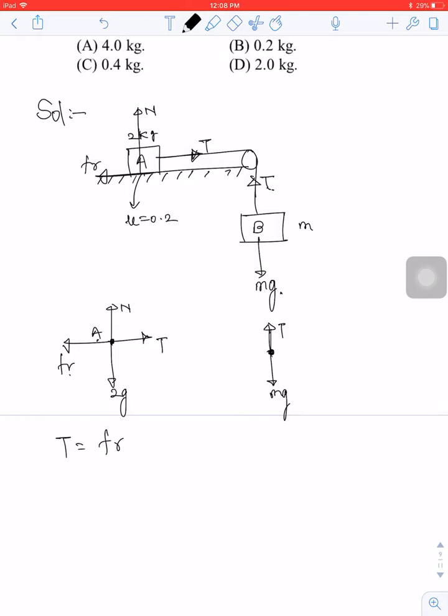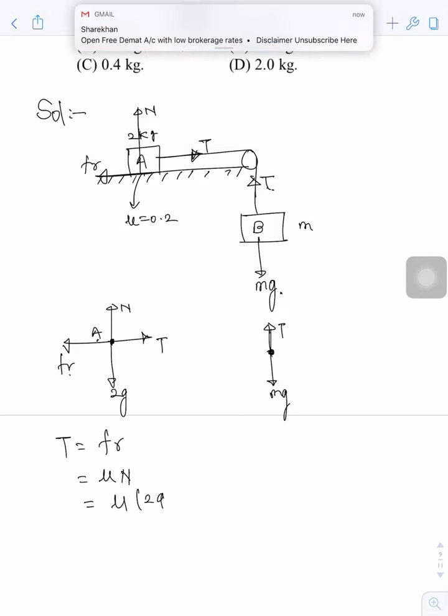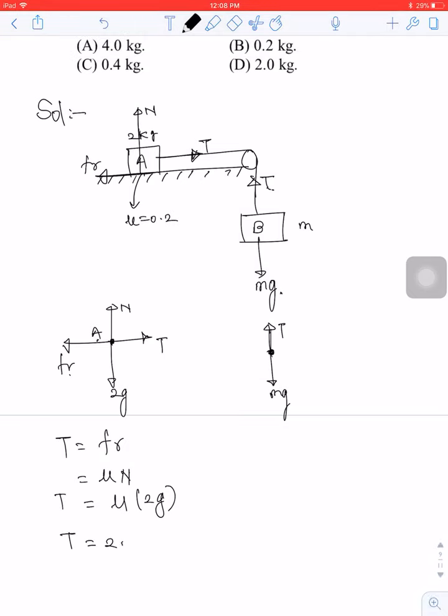Friction equals mu times N, and N equals mg or 2g. So T equals 2 times mu, which is 0.2, times g, which is 10. This gives T equals 4 newtons.